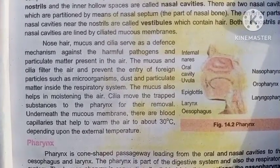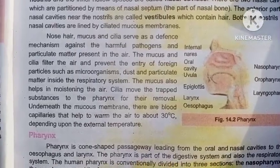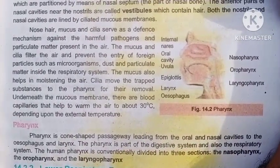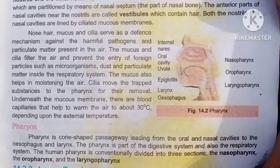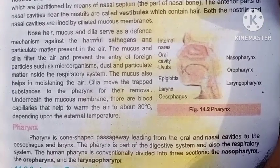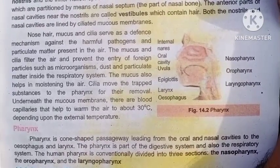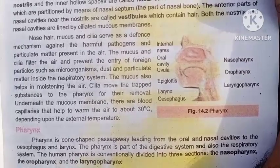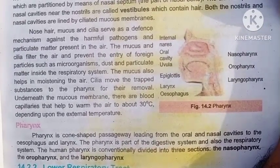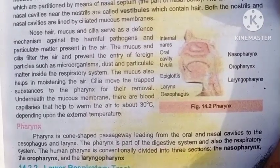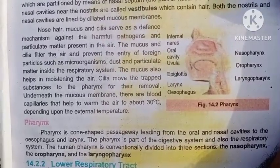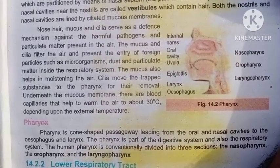The pharynx is the cone-shaped passageway leading from the oral and nasal cavities to the esophagus and larynx. The pharynx is a part of both the digestive system and the respiratory system.